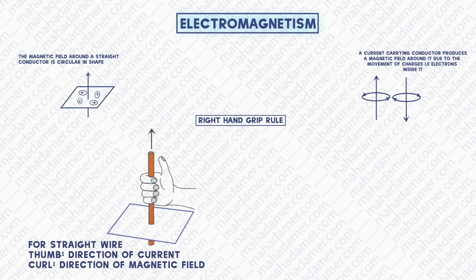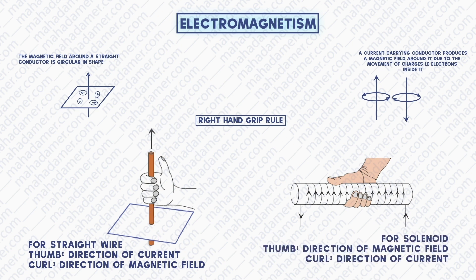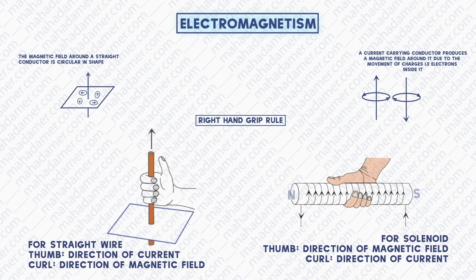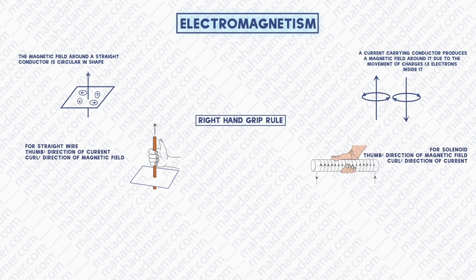In case of solenoid, things are different. In solenoid, the curl of the fingers gives us the direction of the current and the thumb points towards the north pole. When we have the north pole, we know that the other pole must be the south pole.